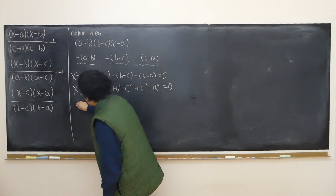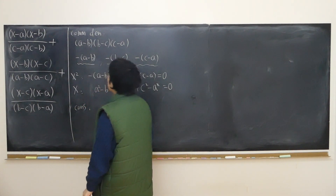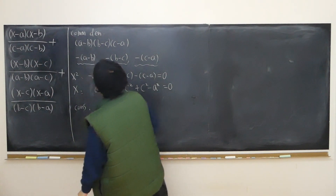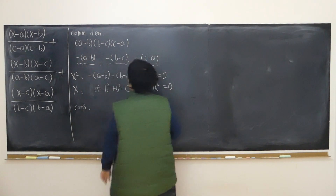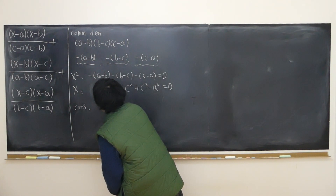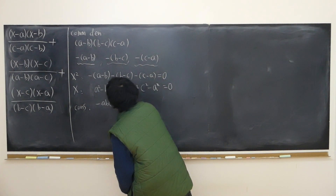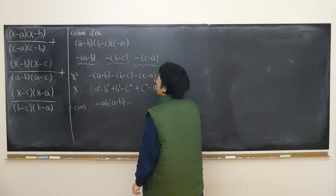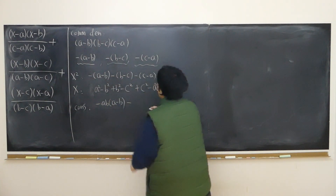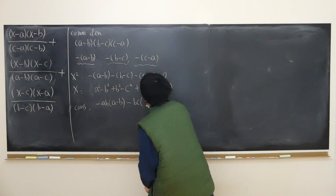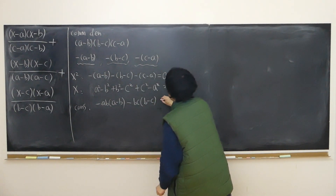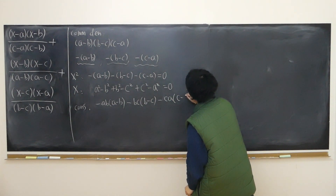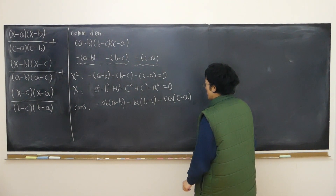So how about the constant term? First term: I have negative (a minus b) times a·b times the constant — so negative (a·b)(a minus b). Likewise, the second one is negative (b·c)(b minus c). Third: negative (c·a)(c minus a). What's the common factor? Let me see — maybe extract b from the first two terms.